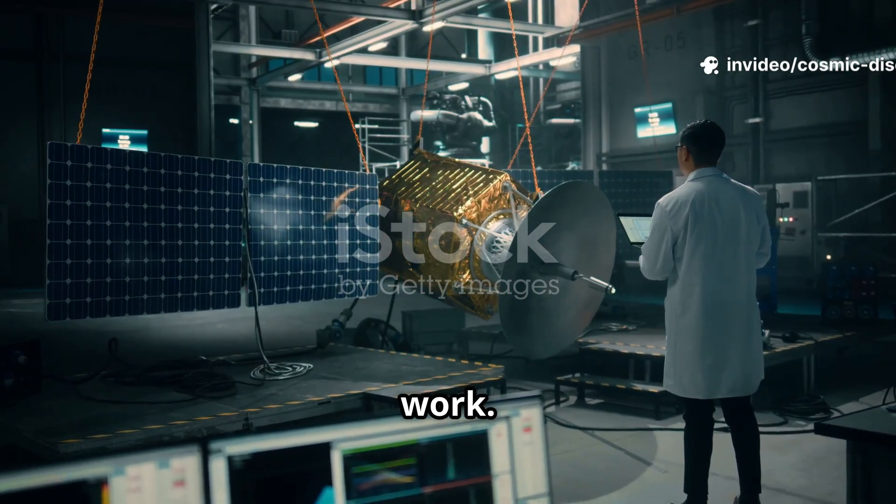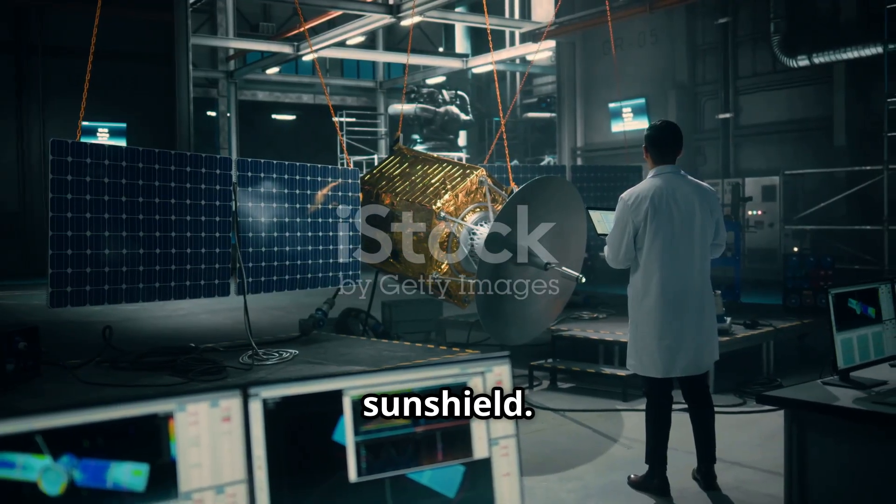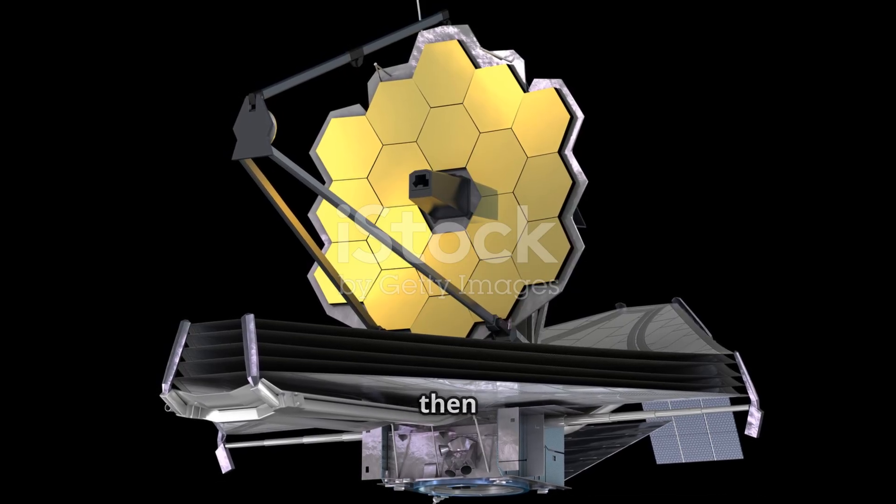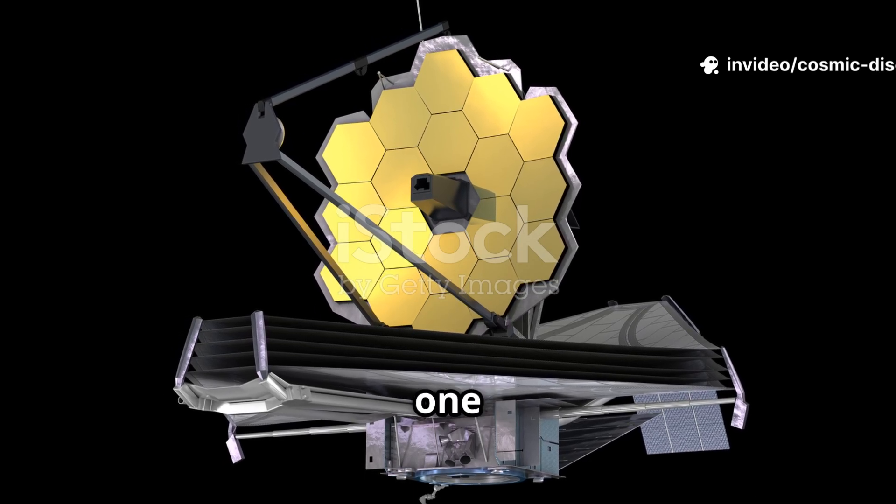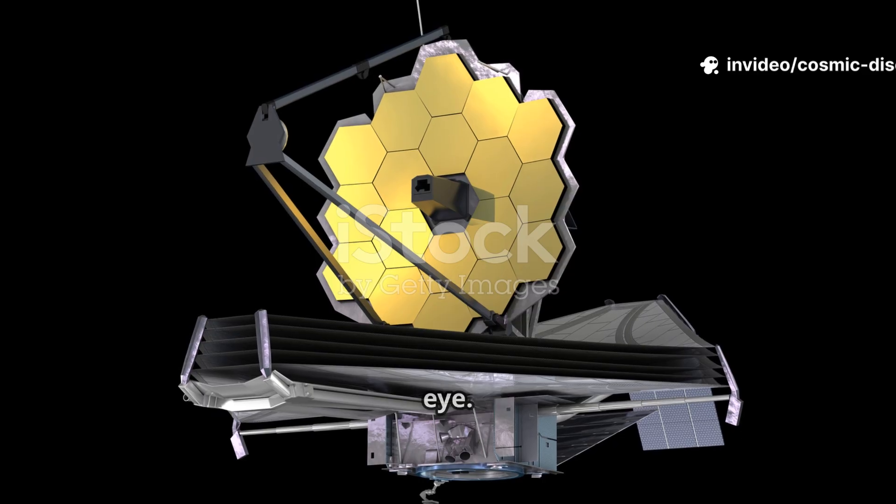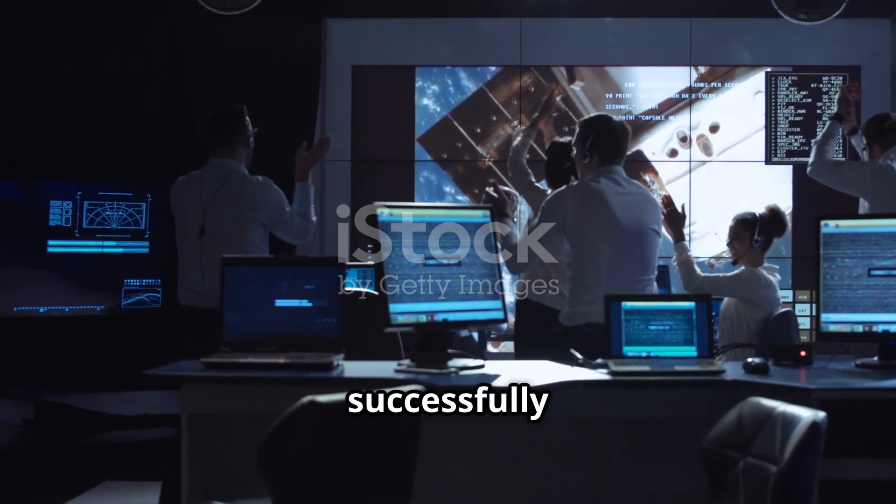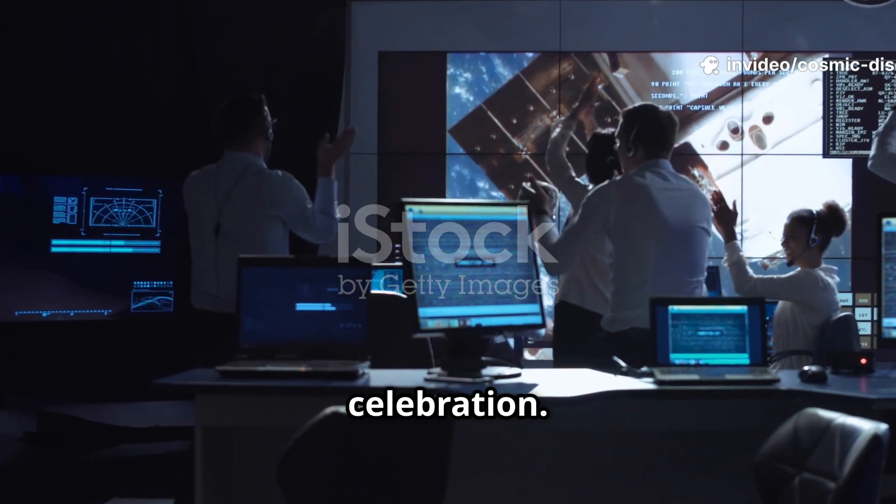Then came the most harrowing part, the unfurling of the giant sunshield. The secondary mirror swung into place on its long tripod, and then the two side wings of the primary mirror folded forward, locking into position to form one single, giant, golden eye. The world watched and waited. Each successfully completed step was met with a mixture of relief and celebration.